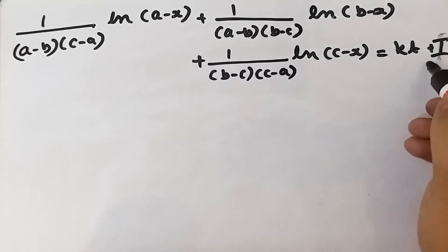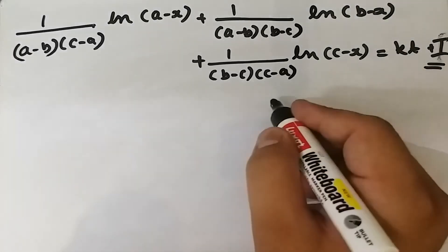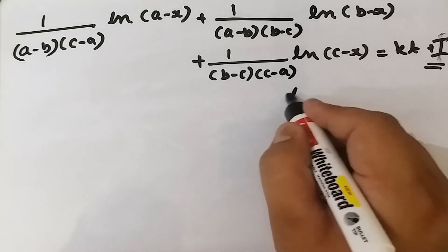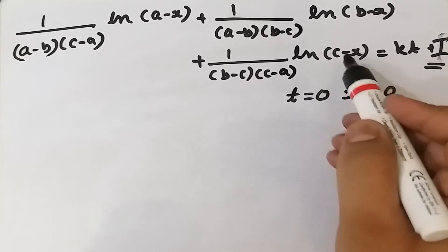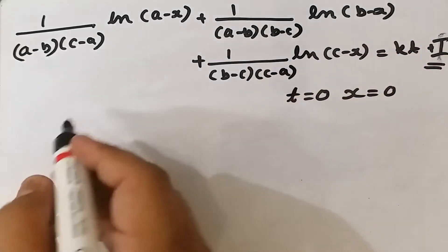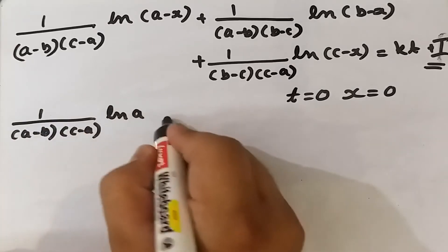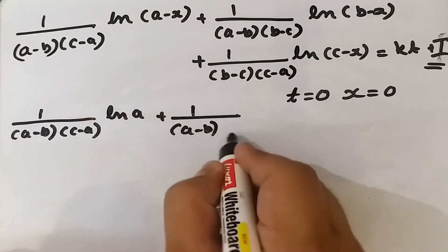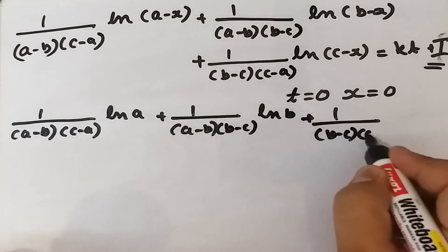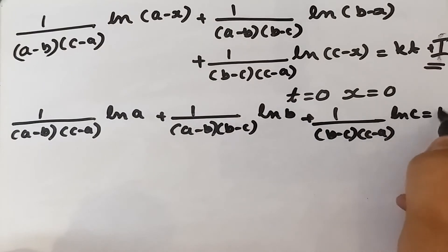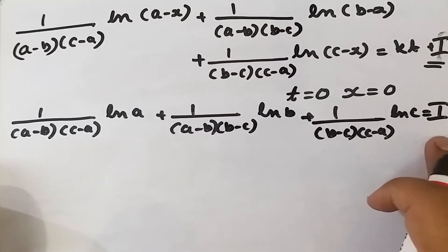To find the integration constant I, we apply initial conditions: at t equals zero, x equals zero. Substituting, all x terms vanish and we get: I equals 1 upon (a minus b)(c minus a) · ln a plus 1 upon (a minus b)(b minus c) · ln b plus 1 upon (b minus c)(c minus a) · ln c.